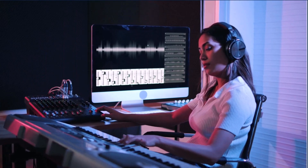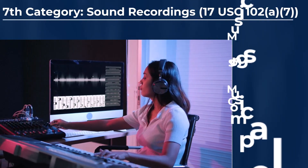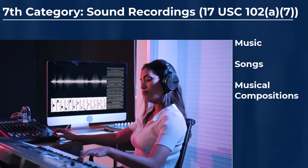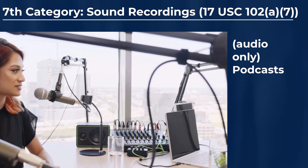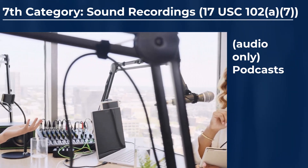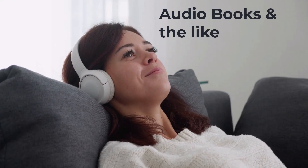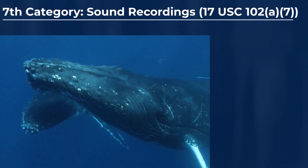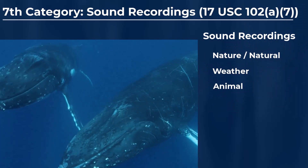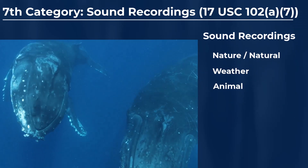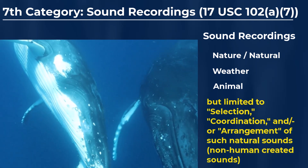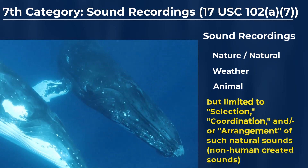The seventh category of creative works that can generally be protected by U.S. copyrights is for sound recordings. Sound recordings can include things like music, songs, and musical compositions with or without lyrics, but sound recordings can also include non-musical types. For example, audio-only recorded podcasts would be an example of a sound recording that would typically qualify for U.S. copyright protection under the seventh category. Similarly, audiobooks are another example. Even natural, weather, and/or animal sounds that might be recorded into a sound recording might qualify, but such sound recordings might be limited only to the selection, coordination, and/or arrangement of such naturally occurring sounds.